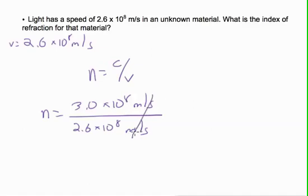Meters per second cancel out and you can either put it into your calculator or you can see that 10 to the 8 and 10 to the 8 cancel out. The index of refraction with two significant figures is 1.5.